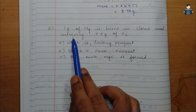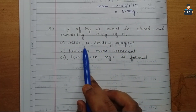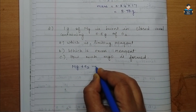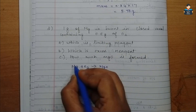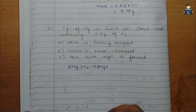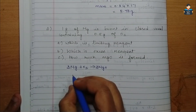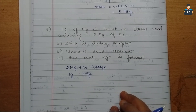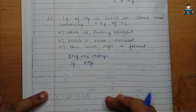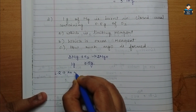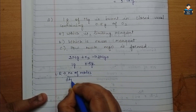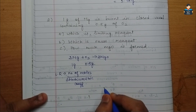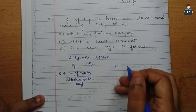Second question: 1 gram of Mg is burnt in a closed vessel containing 0.5 grams of O2. Which is the limiting reagent and which is the excess reagent? The equation is: 2Mg + O2 → 2MgO. This is the balanced equation. To find the limiting reagent, use the formula: number of moles divided by stoichiometric coefficient.